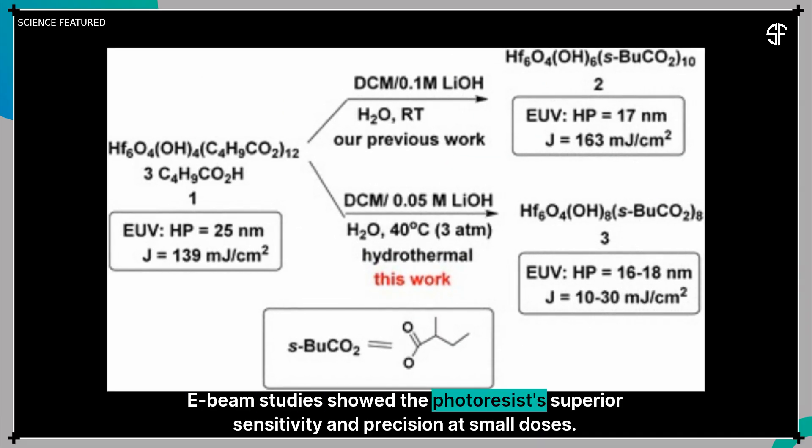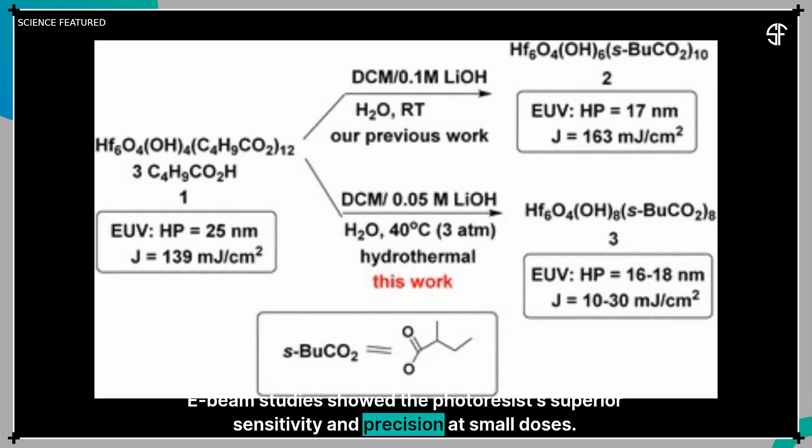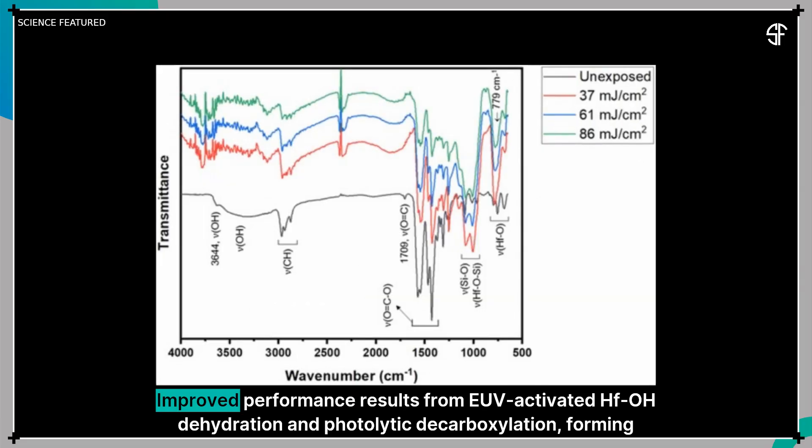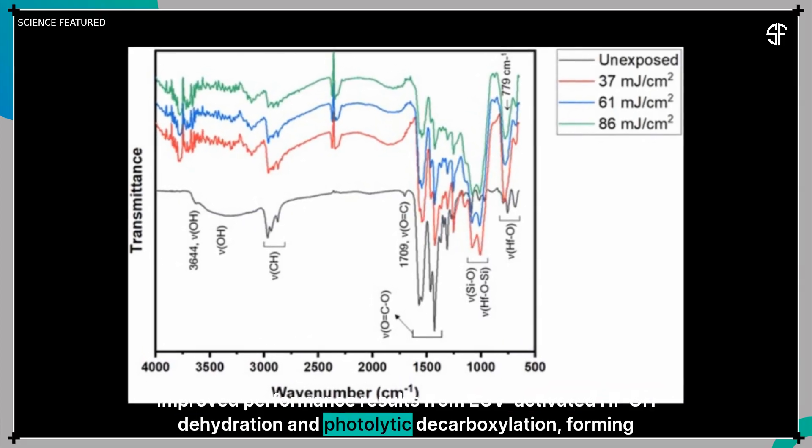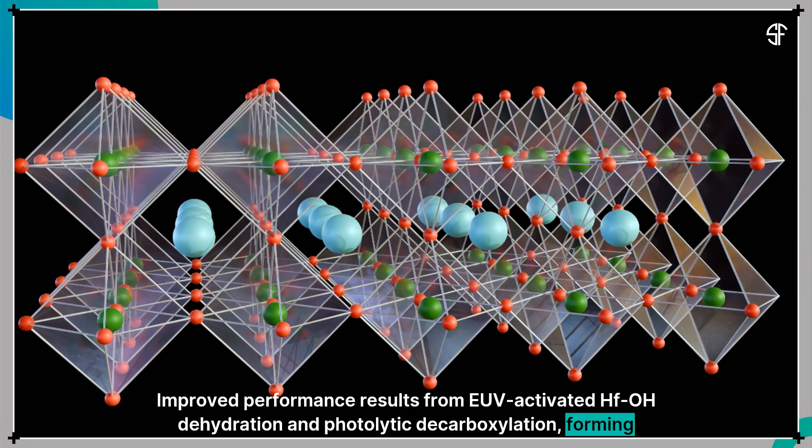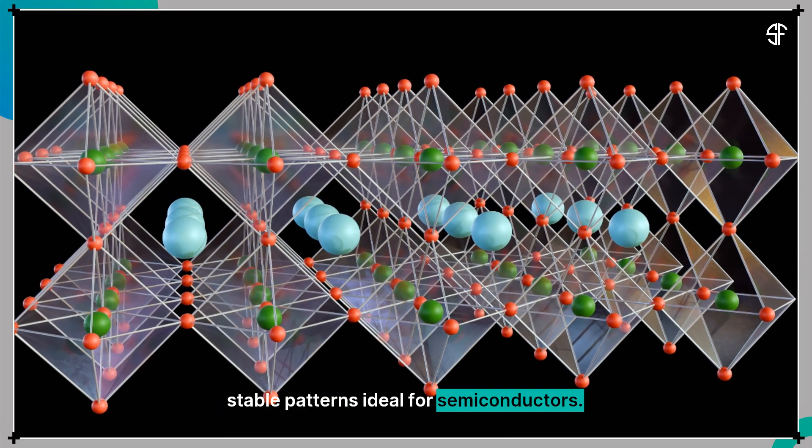E-beam studies showed the photoresists' superior sensitivity and precision at small doses. Improved performance results from EUV-activated HFOH dehydration and photolytic decarboxylation, forming stable patterns ideal for semiconductors.